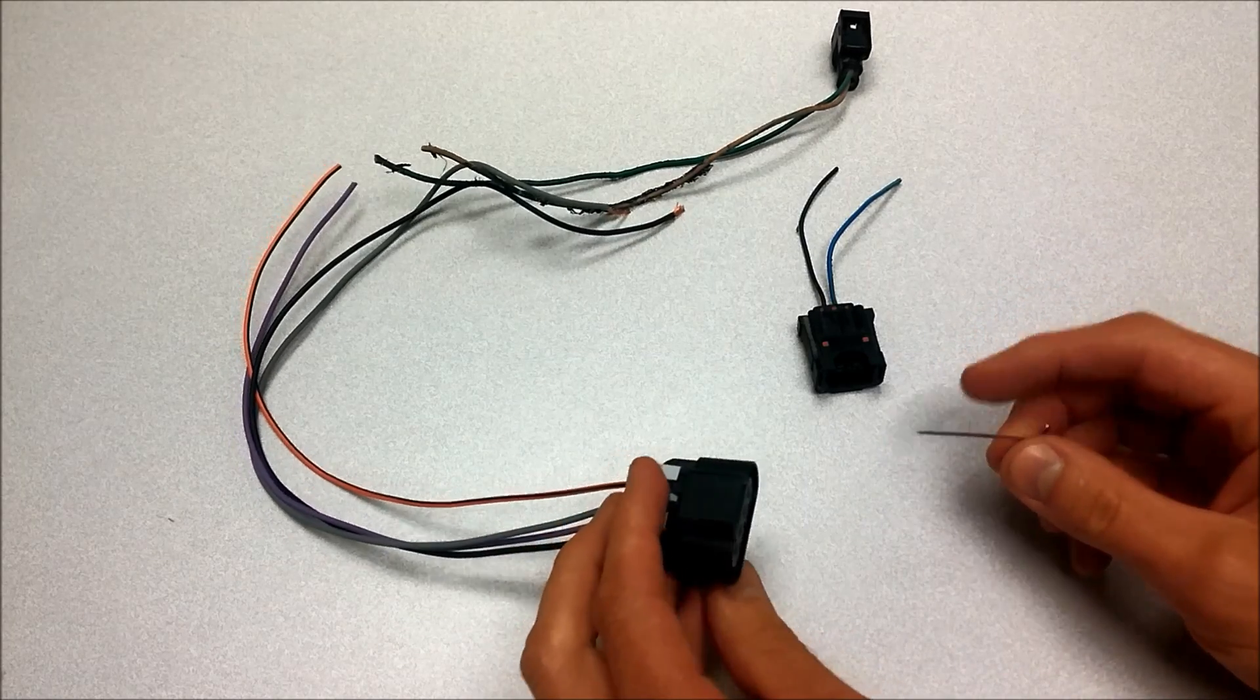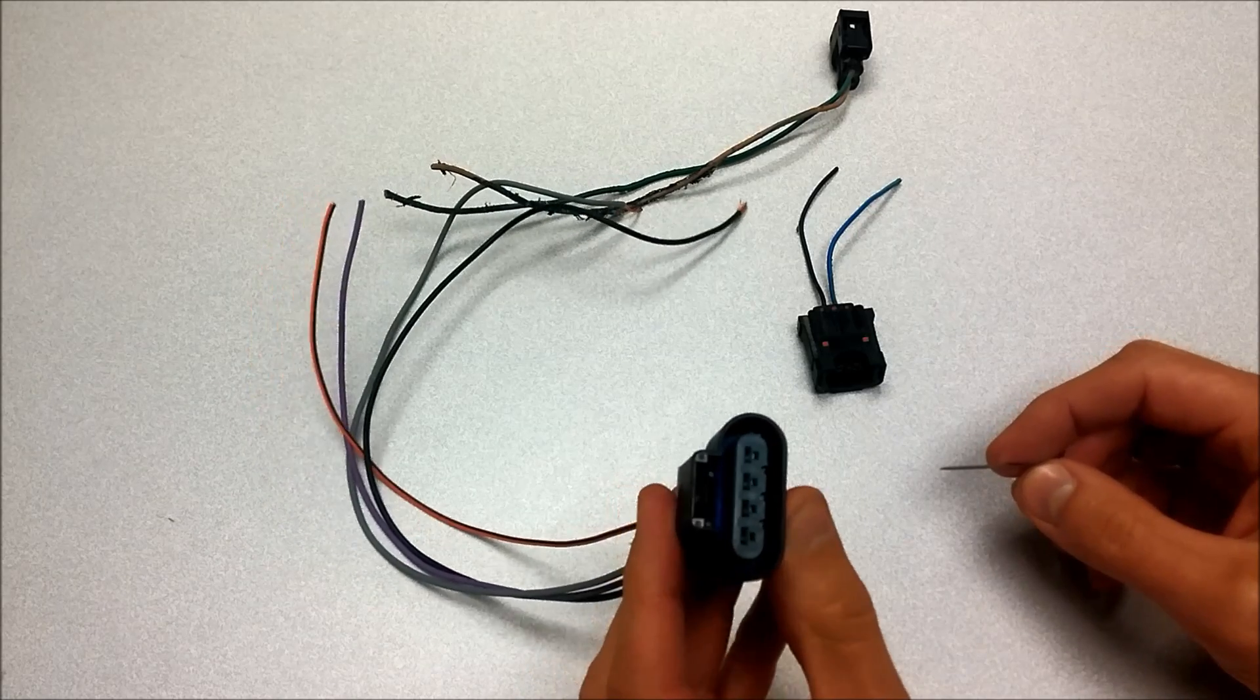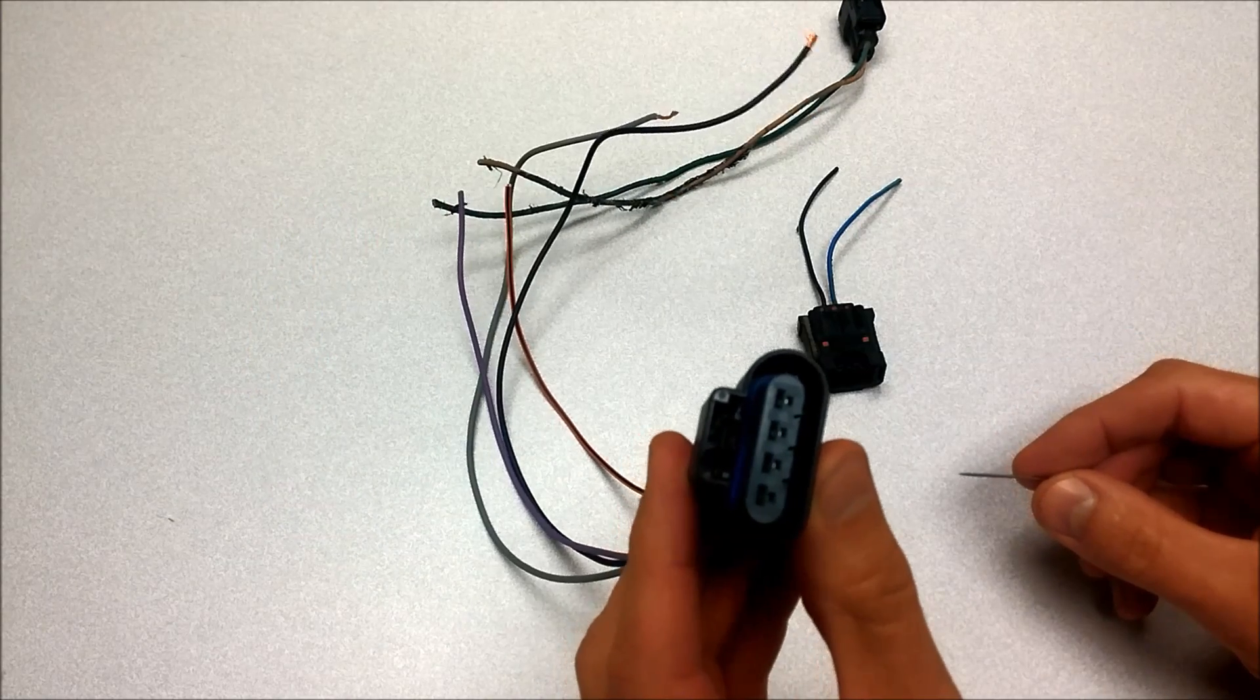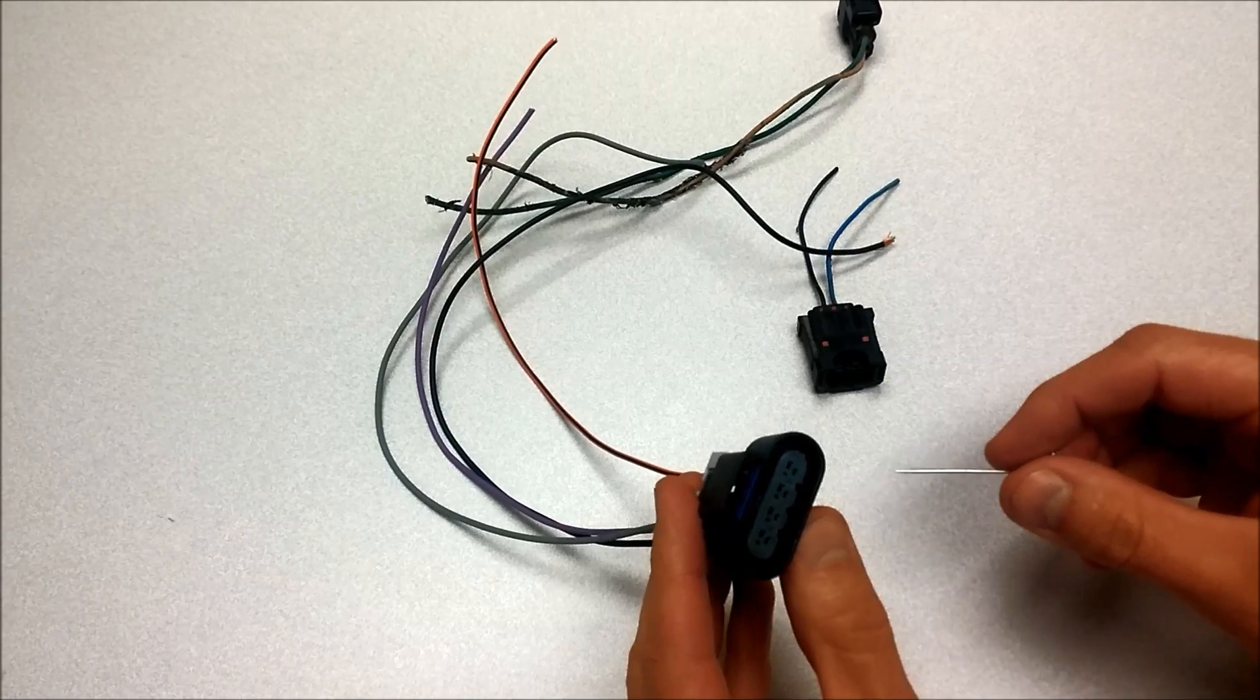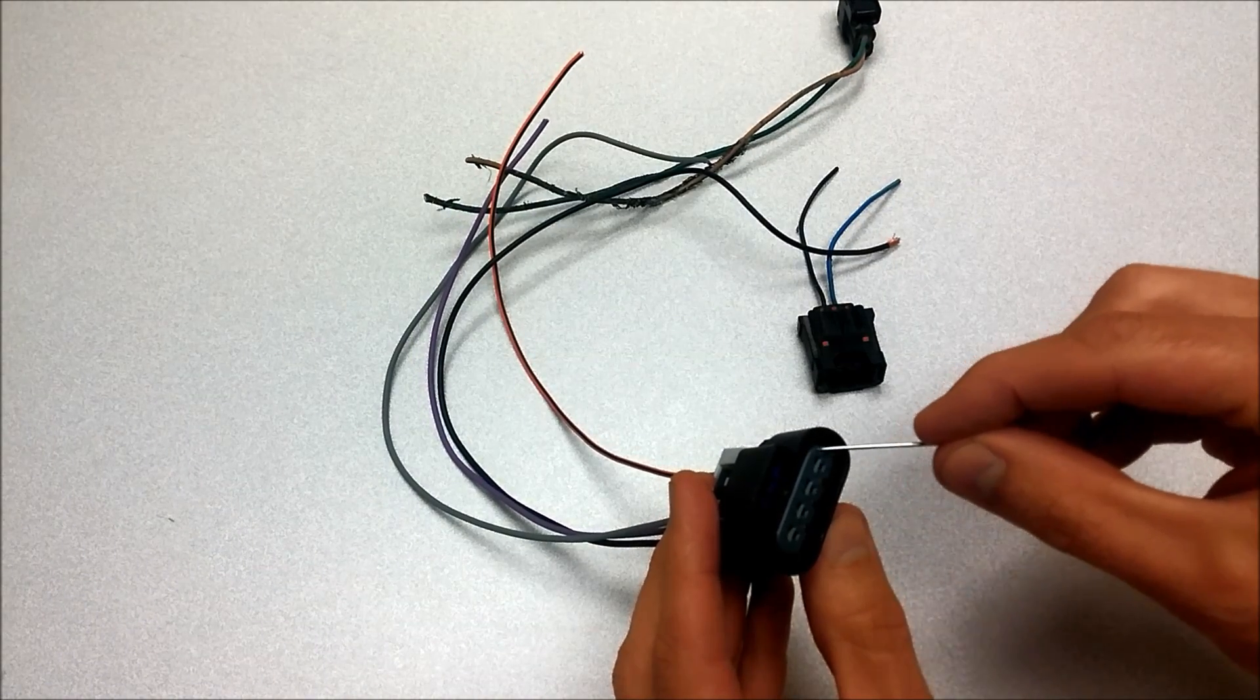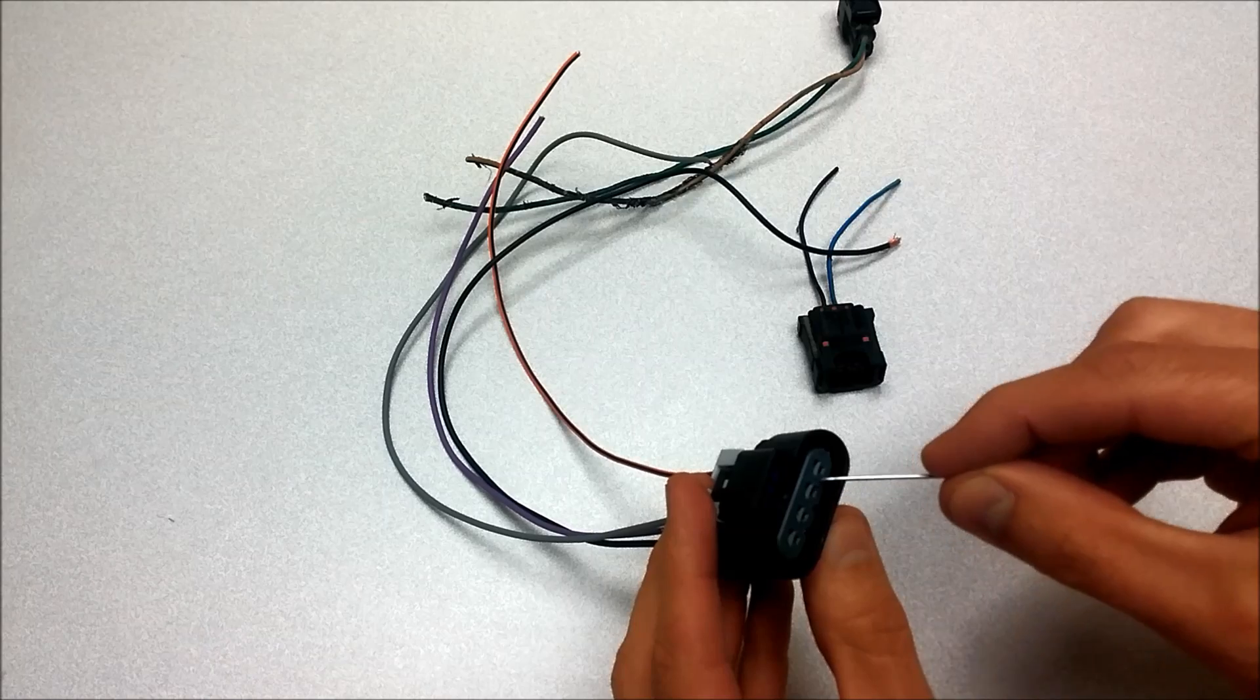But here's how you do this. I'll show you some examples. Every connector is just a little bit different. This one right here, for example, has a plastic piece that snaps over the top. We've got to remove it first.